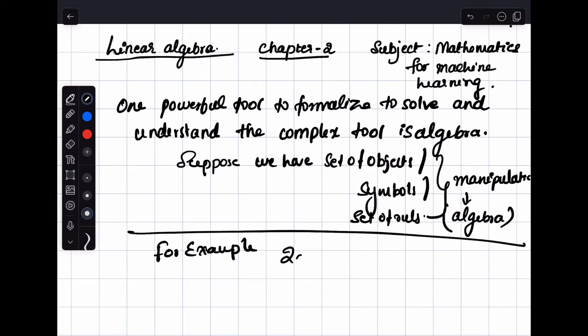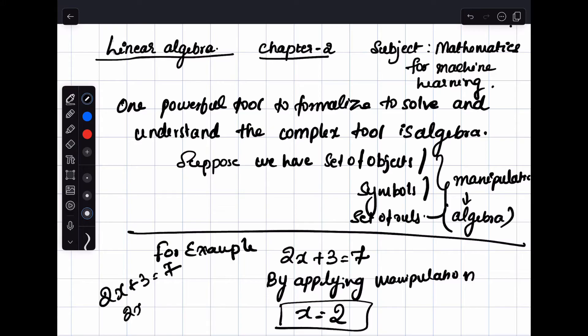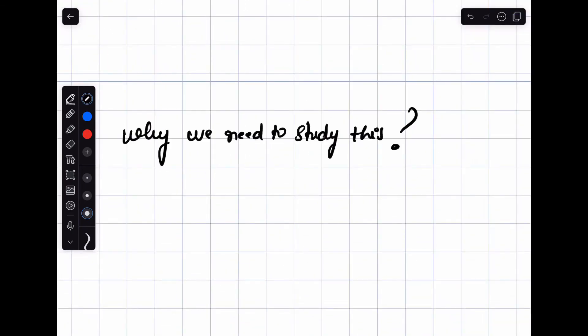Now again, it might be difficult for you to understand, so let's see one example. For example, we have 2x plus 3 equals 7. By applying the manipulation, you can solve and get the value x equals 2. For beginners, let me solve it. I hope you know this very simple math, right? Why do we need to study this?